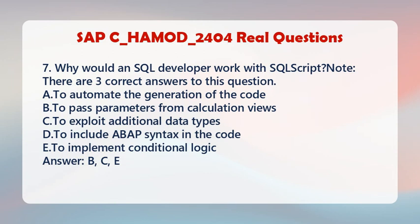Question 7: Why would an SQL developer work with SQL script? Note: There are three correct answers to this question. A. To automate the generation of the code. B. To pass parameters from calculation views. C. To exploit additional data types. D. To include a BAP syntax in the code. E. To implement conditional logic. Answer: B, C, E.